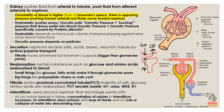Hydrostatic pressure pushes fluid out. There is another force: oncotic pressure, also known as osmotic pressure. Oncotic pressure draws water back into the blood. It's a force created by the presence of proteins such as albumin in the blood, and these proteins create an osmotic pressure that pulls fluid back into the glomerular capillaries.